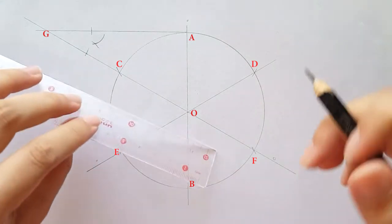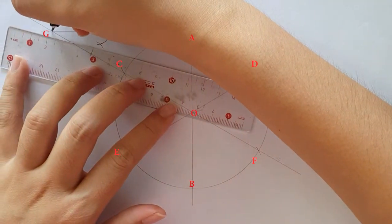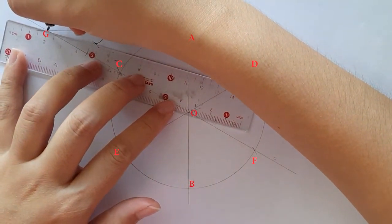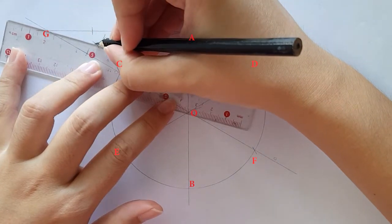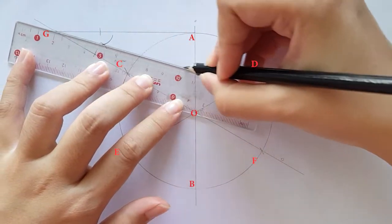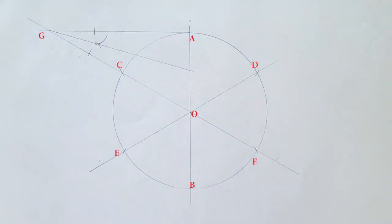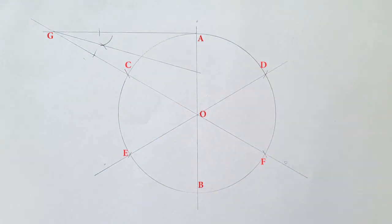Then, draw a straight line from point G through bisector mark and land on line OA. This point is called point 1.